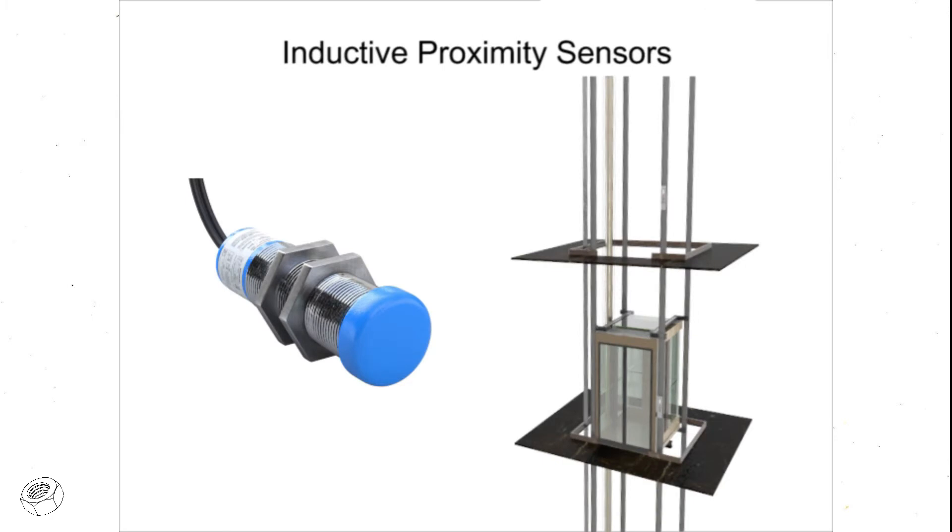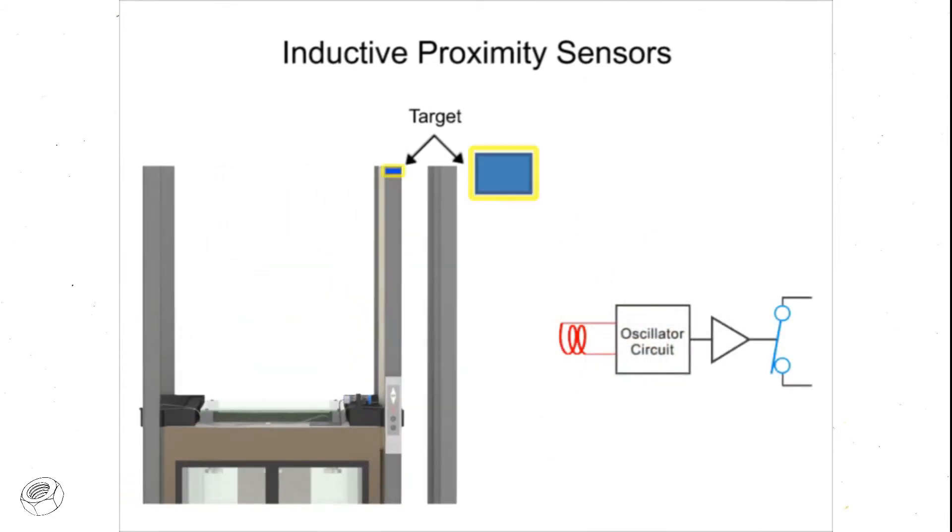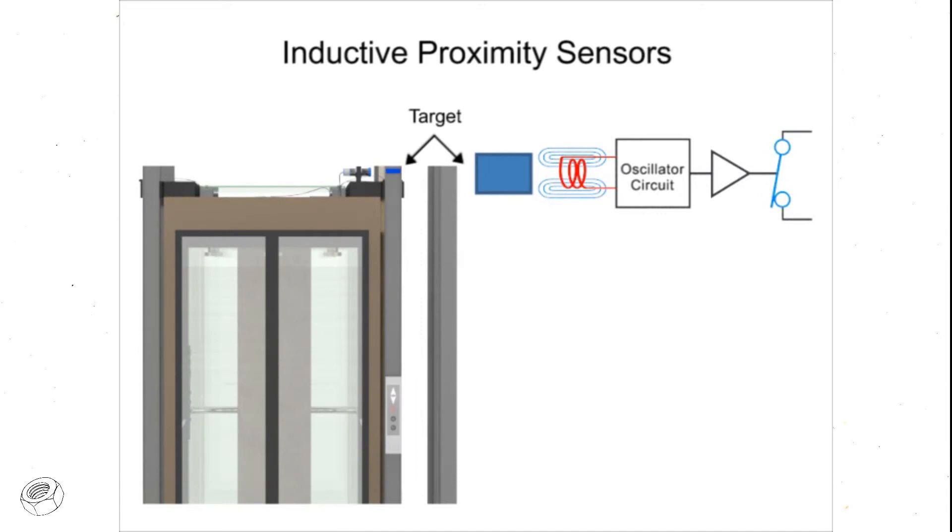Inductive sensors can detect a target from 0.5 millimeters to 40 millimeters. They only detect metallic targets and therefore use a magnetic field to detect its presence. When a ferrous metal material enters the magnetic field, electrical currents known as eddy currents are induced on the metal surface.